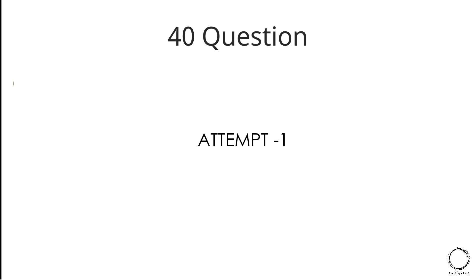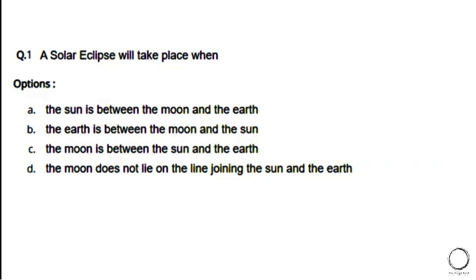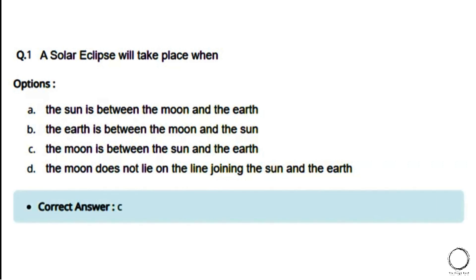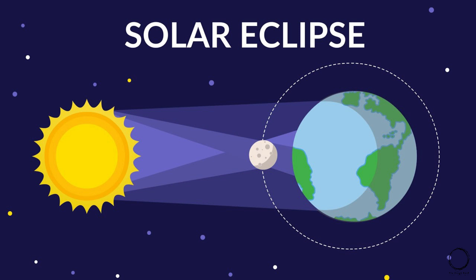Question 1: A solar eclipse will take place when — options: a) the sun is between the moon and the earth, b) the earth is between the moon and the sun, c) the moon is between the sun and the earth, d) the moon does not lie on the line joining the sun and the earth. The right answer is option C, as you can see in the image, where the moon is in between the sun and the earth.